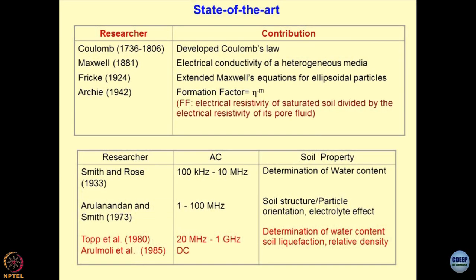All this started since 1736 when Coulomb came out with the theory known as Coulomb's law. Then came Maxwell, Frick, and Archie. Archie's factor — the formation factor — which is a function of porosity, is what is being used by people in the realm of geotechnical engineering and geophysics.